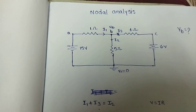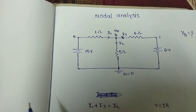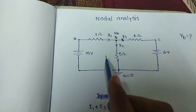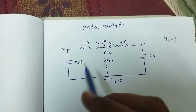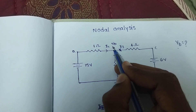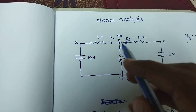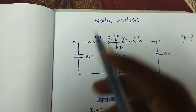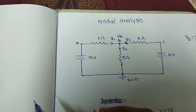Hey guys, welcome to the channel. Today we are going to solve nodal analysis. In this present circuit we are going to apply the nodal analysis. We are going to find the VB value — that means this particular node. Before that, we will solve the nodal analysis; we have to identify the nodes.